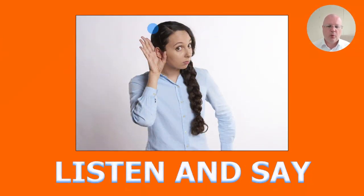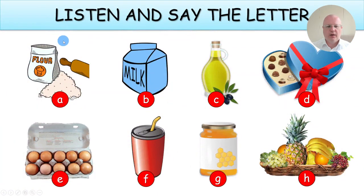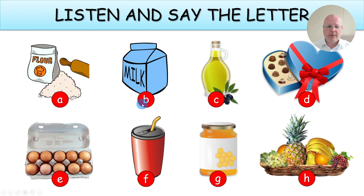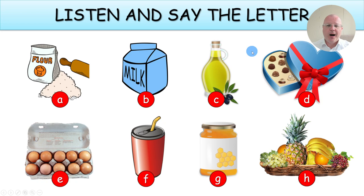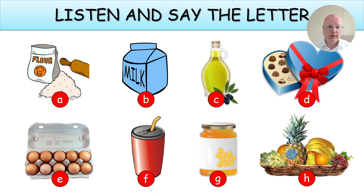Now we have Task 1: Listen and Say. One way to do it is to invite a student from each team to stand up, then name one of the pictures — for example, a carton of milk — and whoever says the correct letter first gets a point. Then you invite the next pair of students. Or you can do it as a choral drill: you say a word, for example a bottle of olive oil, and the whole class says C. Then you say a basket of fruits and the whole class says H. Two different ways — it's really up to you which one you prefer.